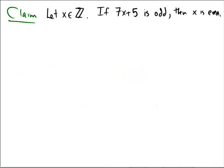Let's prove that if x is an integer, then if 7x plus 5 is odd, we have that x is even. So we're proving an implication here that 7x plus 5 is odd implies x is even.